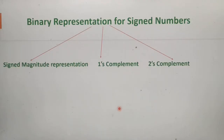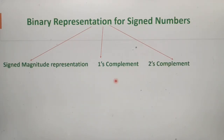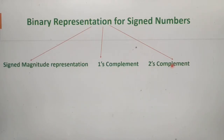We can represent signed binary numbers in different ways. In our textbook, three methods are given. The first one is signed magnitude representation, the second one is one's complement, and the third one is two's complement. The most popular and commonly used method is two's complement.